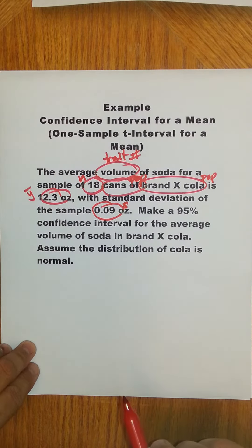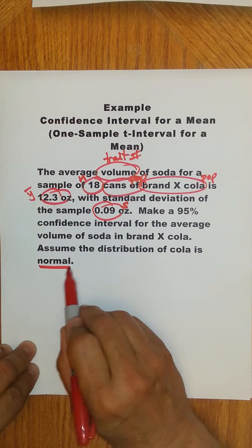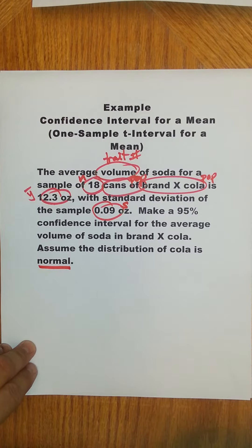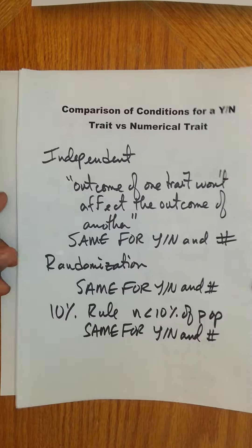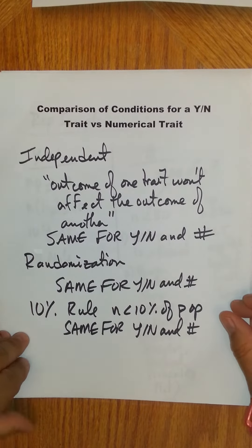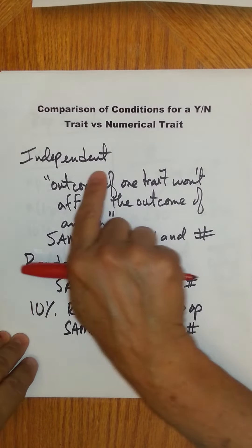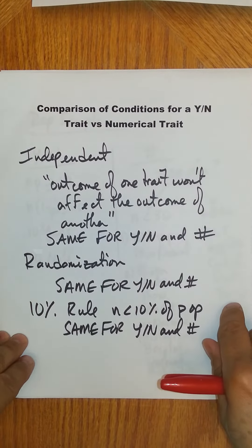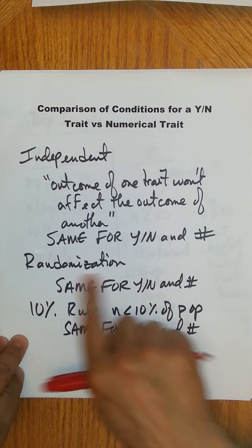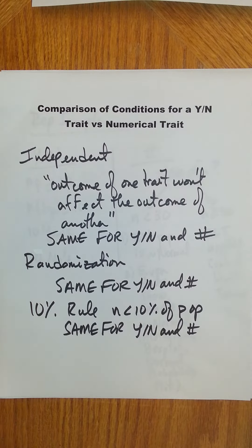Now we're asked to find a confidence interval and they tell us assume the distribution of the volume of cola is normal. One thing I wanted to mention before we start out is a comparison of the conditions for the yes-no trait versus numerical trait. Really they're the same. We're going to have to check conditions always. Independent, where the outcome of one trait won't affect the outcome of another, is the same for a yes-no trait as it is for a numerical.